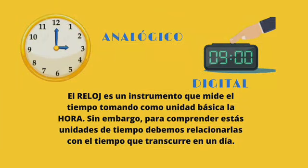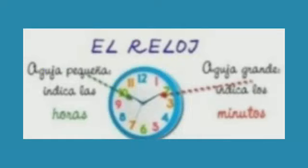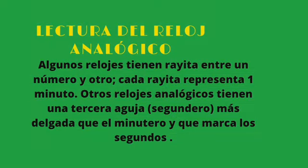Podemos decir que el reloj es un instrumento que mide el tiempo, tomando como unidad básica la hora. Sin embargo, para comprender estas unidades de tiempo, debemos relacionarlas con el tiempo que transcurre en un día. En el reloj podemos observar una aguja pequeña o corta que indica las horas, y la aguja grande o larga indica los minutos. Lectura de reloj analógico.